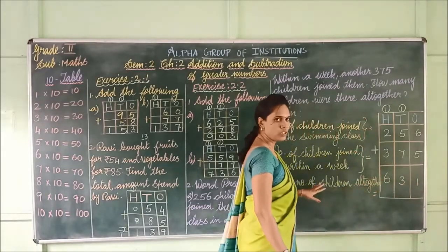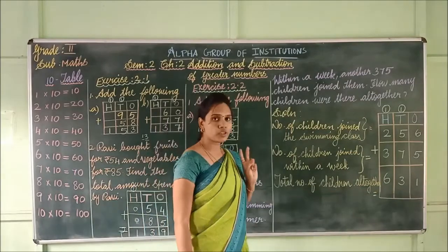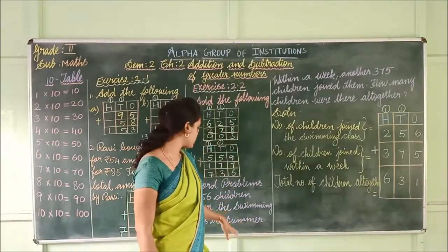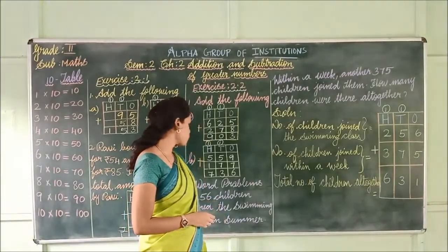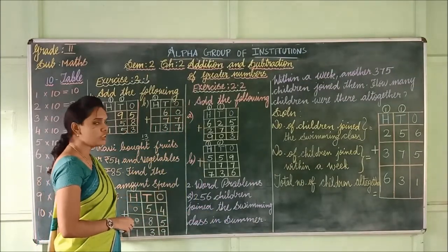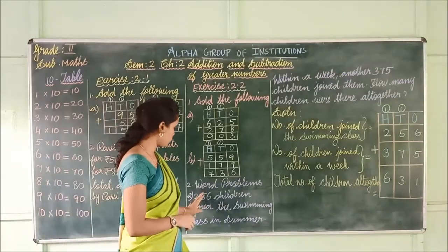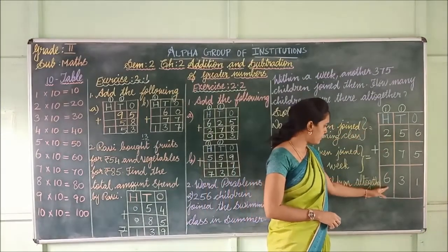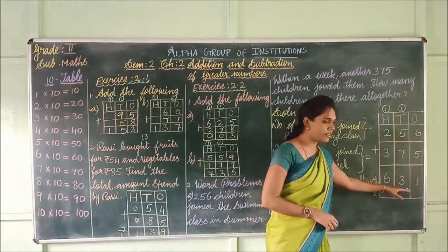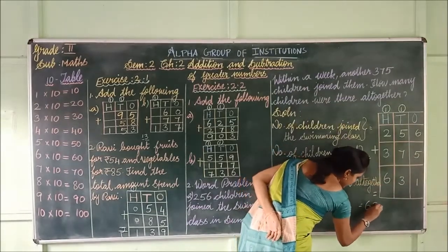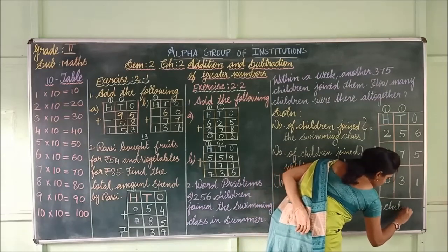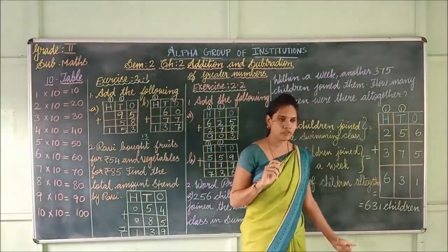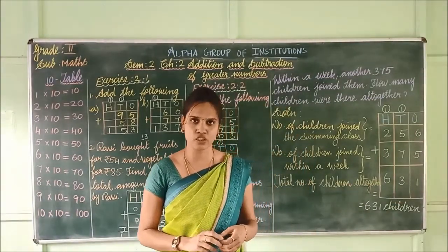Have you understood the word problem, children? Today we have seen addition: addition of 2-digit numbers with regrouping and addition of 3-digit numbers with regrouping. We regrouped the numbers and also solved word problems. You have to write the numbers, do the addition, and write the final answer — 631 children — at the last. If you are following this video, I have given the assignment. You have to complete the assignment and submit it. Thank you, children.